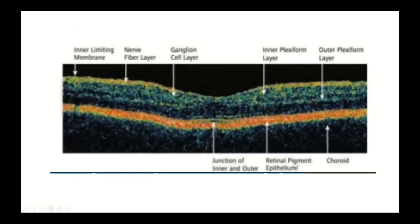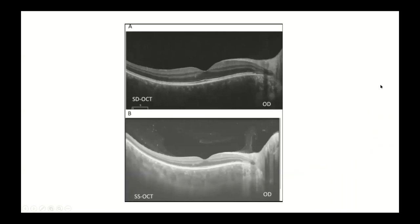In a larger image, the RPE cells and nerve fiber layers are quite reflective and appear red, while the vitreous and photoreceptors are rather dark with low reflectivity. Structures in between — like the inner and outer plexiform layers — appear green.